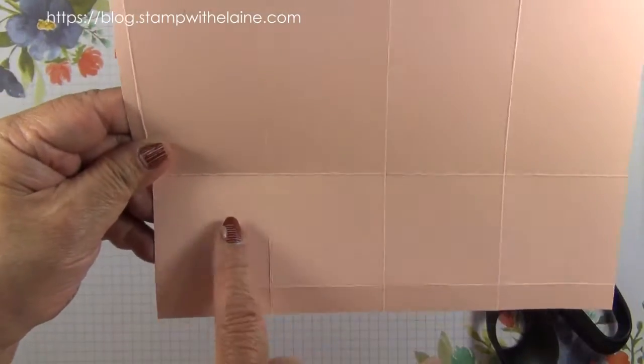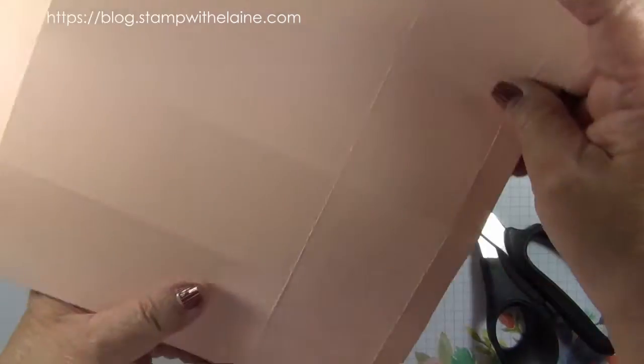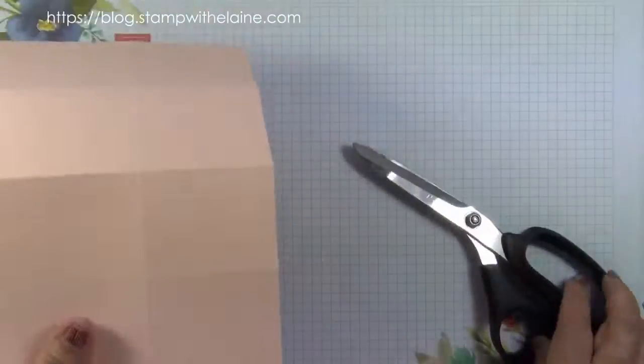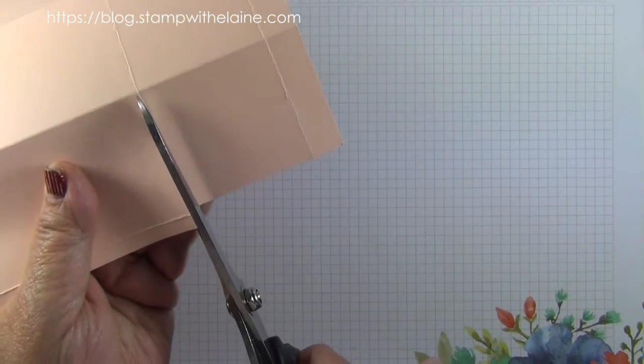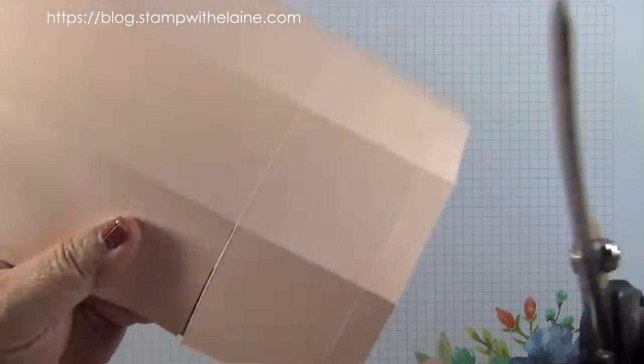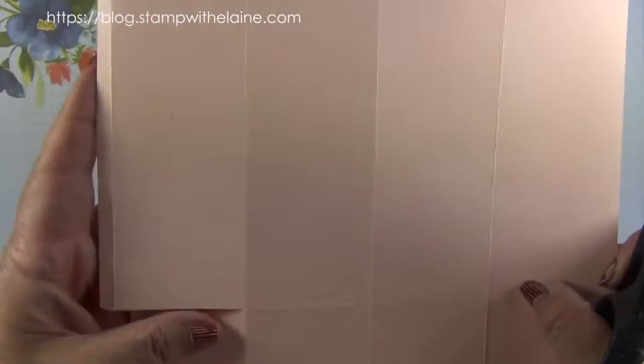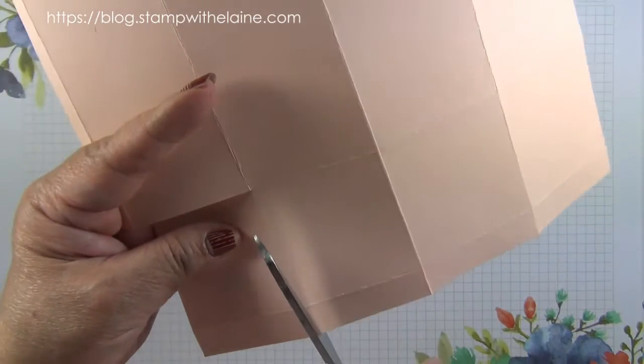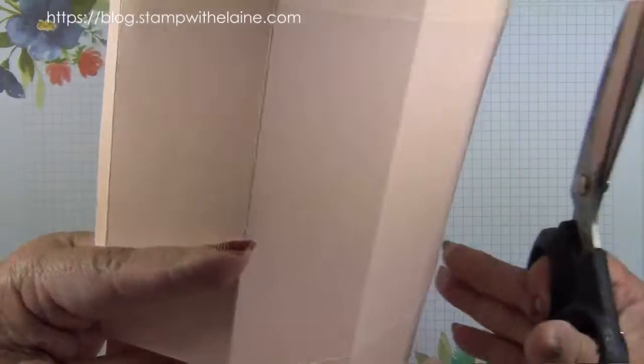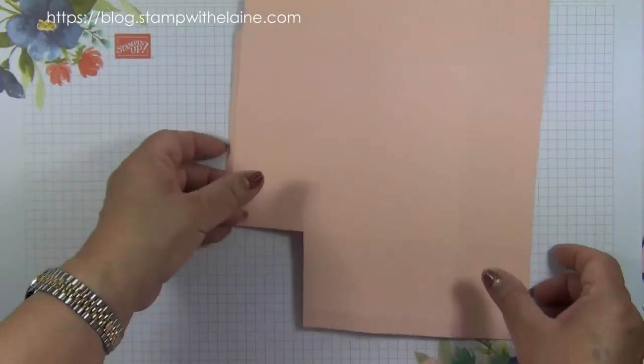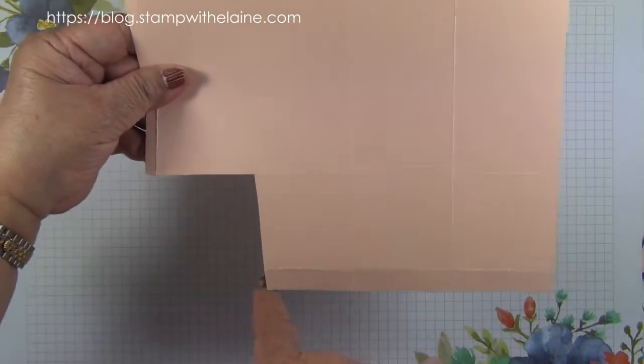With the quarter inch tab on your left at the bottom, you'll take up the first square up to the next score line, and then I'm just going to angle that and cut a V shape so you're left with a piece like that.